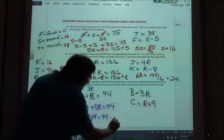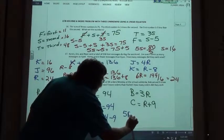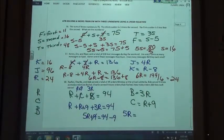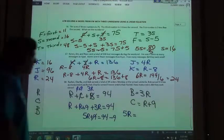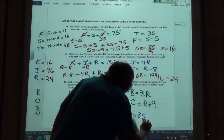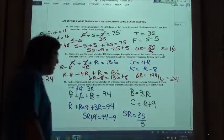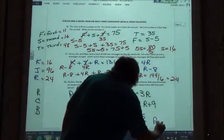I've got to subtract my nine. So five R is going to equal 85. And if I divide by five, R equals 17.